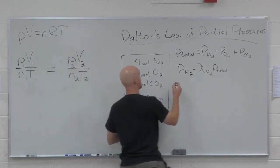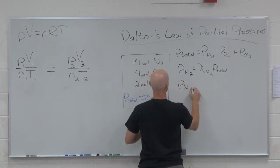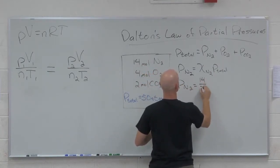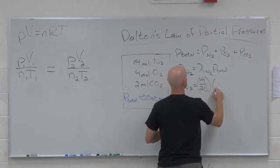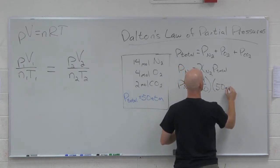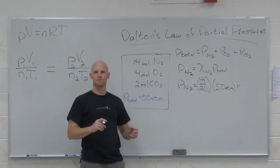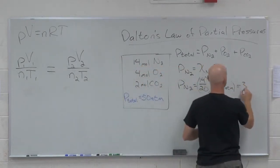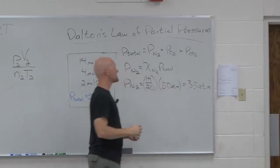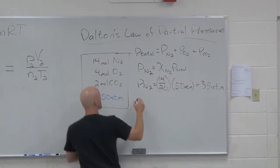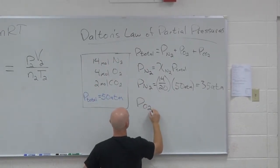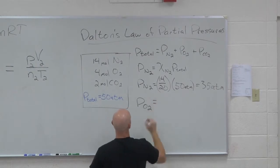And so in this case, your PN2 would equal 14 out of 20 is the mole fraction, times the total pressure of 50 atmospheres, and what do we get? What is 70% of 50? 35 atmospheres.